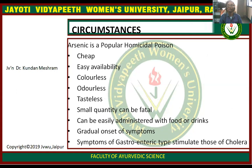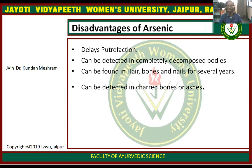Arsenic is a popular homicidal poison because it is very easily available, colorless, odorless, and tasteless, and a small amount can be lethal. It can be easily administered with food or drink, with gradual onset of symptoms resembling gastroenteritis like cholera. A disadvantage for the poisoner is delayed detection: it can be found in completely decomposed bodies, and detected in hair, bone, and nails for several years, and even in child bone and soil.